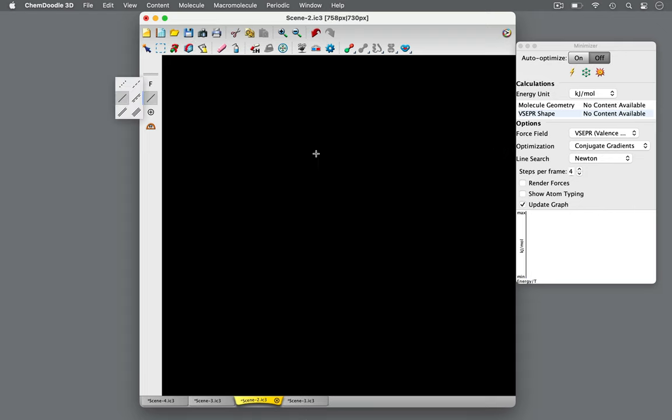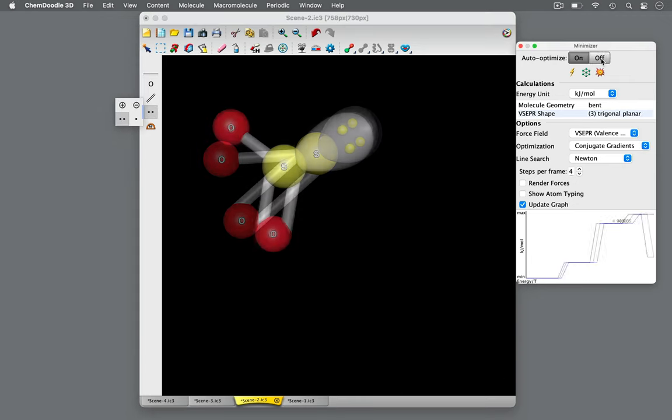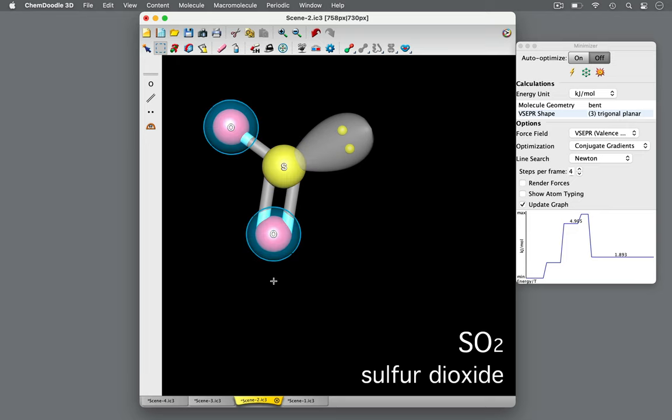What if one of the bonds is a lone pair? Let's examine sulfur dioxide. Sulfur, the central atom, is bonded to two oxygen atoms and has one lone pair for a total of three domains of high electron density.